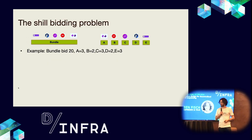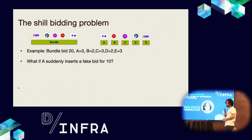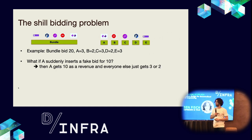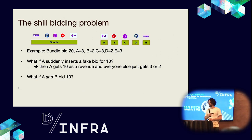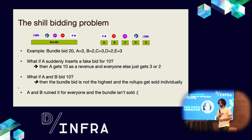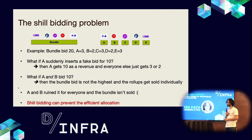The problem with this straw man is something called shill bidding. What if A suddenly inserts a fake bid for 10? It knows that if it submits a bid for its own rollup, it can try to get a larger cut than it really deserves — A could get 10 as revenue while everyone else gets only 3 or 2. And if both A and B bid 10, then the bundle bid is no longer the highest and the rollups would get sold individually. A and B ruined it for everyone else — the bundle isn't sold just because A and B bid too high on themselves.